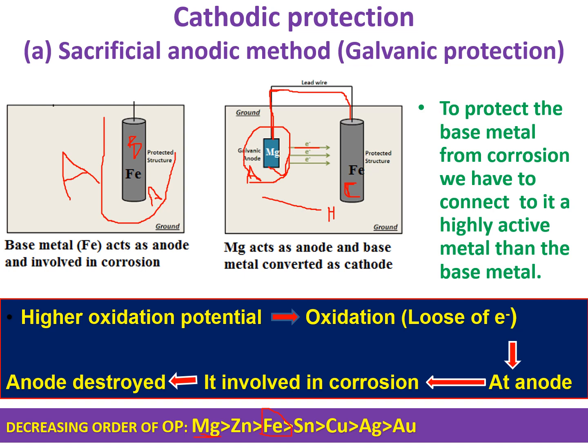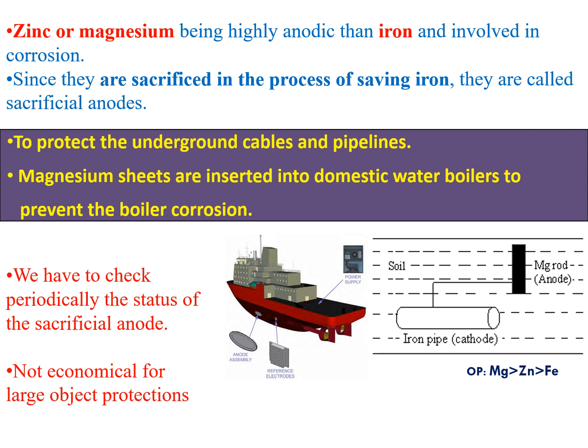By keeping a more active metal than the base metal near it and connecting them with an external wire, the anodic base metal is converted into a cathodic metal. This method is called the sacrificial anodic method. Zinc or magnesium, being highly anodic compared to iron, both act as anodes. If you want to protect iron, you can connect it with either magnesium or zinc — both have higher oxidation potential than iron, so they are involved in corrosion and iron is protected.